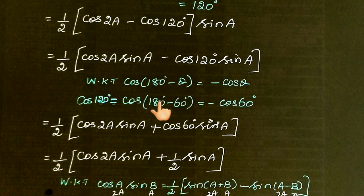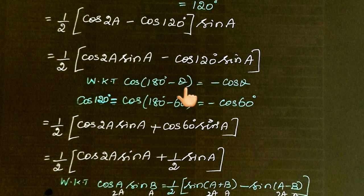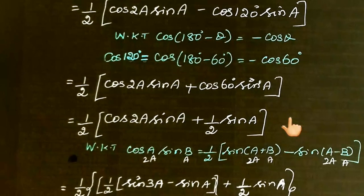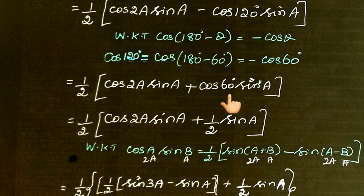This gives us 1/2[cos(2A)sin(A) + cos(60°)sin(A)]. Since cos(60°) = 1/2, this becomes 1/2[cos(2A)sin(A) + 1/2 sin(A)]. Now we'll use product-to-sum identities.